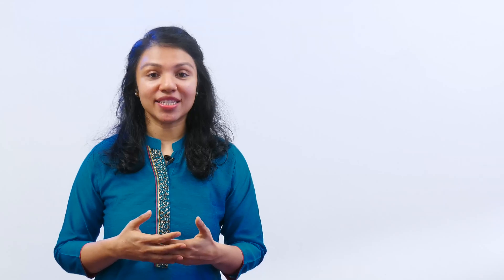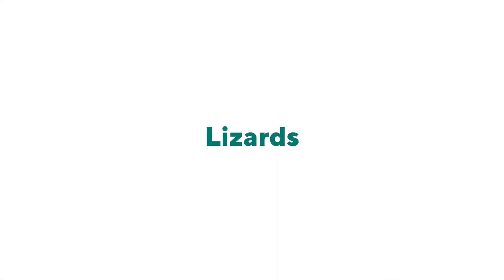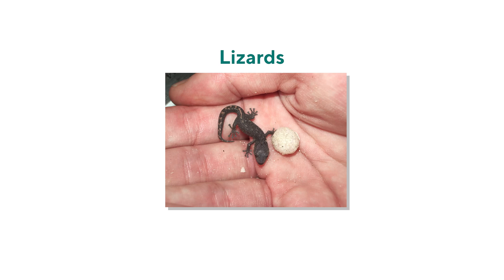Other animals like turtles, snakes, and crocodiles lay their eggs on land. Sometimes they even cover the eggs with sand so that the eggs get enough warmth, and out of the eggs hatch babies. If you've helped your parents clean your house, you may have noticed small white eggs on windowsills, under shelves, or on furniture. These are the eggs of lizards, and out of these eggs come lizard babies. The same goes for ants.